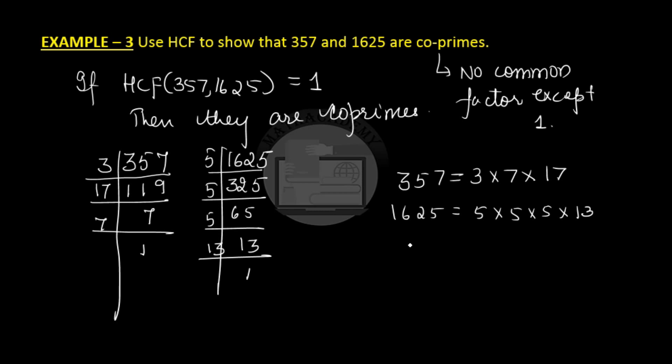So 357 factors are 3 times 7 times 17 and 1625 factors are 5 times 5 times 5 times 13. Do they have any common factor? They do not have any common factor. And hence we say that 357 and 1625 are coprimes.